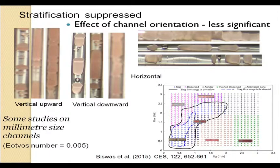This has already been seen for air-water flows in milli channels and micro channels. From experiments done in the multiphase flow laboratory of the chemical engineering department, we find that for vertical upward, vertical downward, and horizontal flow, more or less they are all marked by slugs — the slugs become larger and then we have annular in all three cases. This shows the insignificant effect of orientation even in millimeter-size conduits for both gas-liquid and liquid-liquid systems.